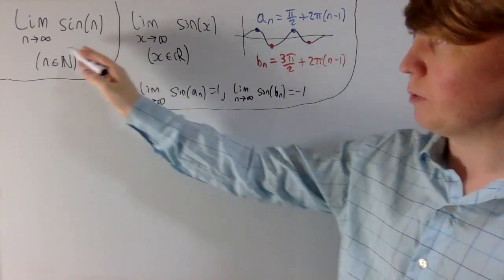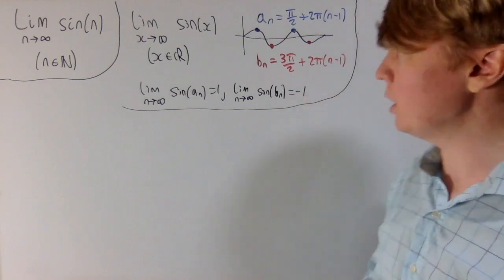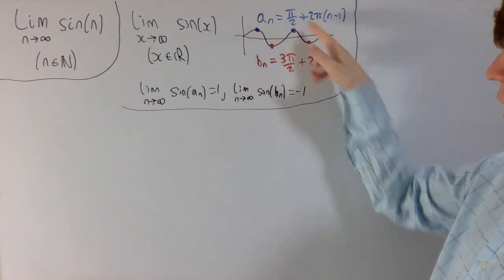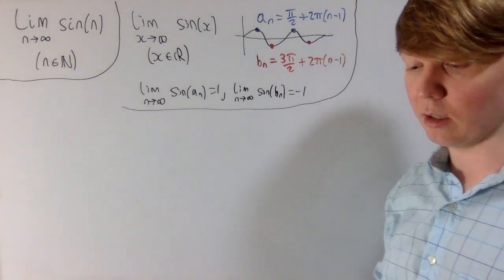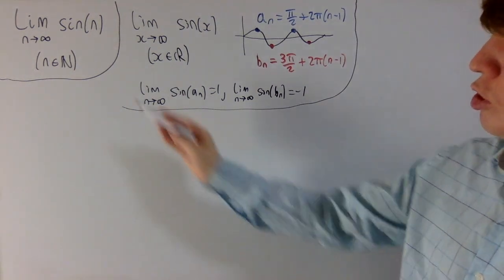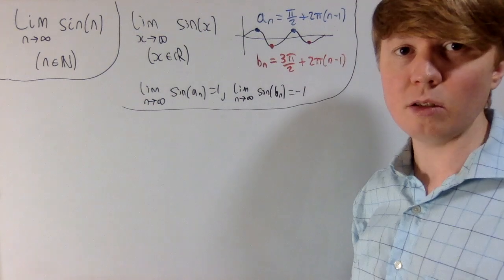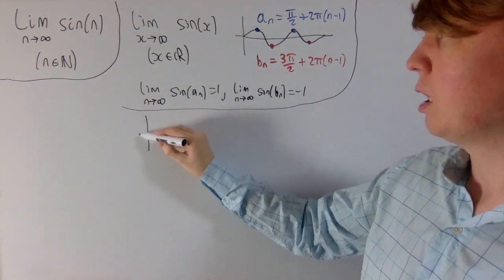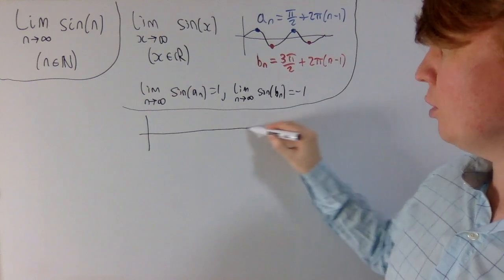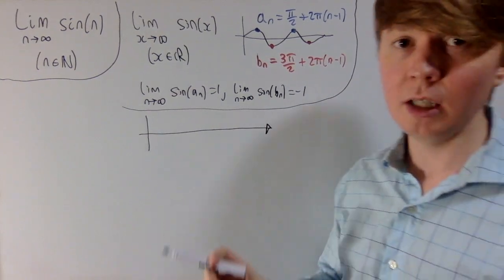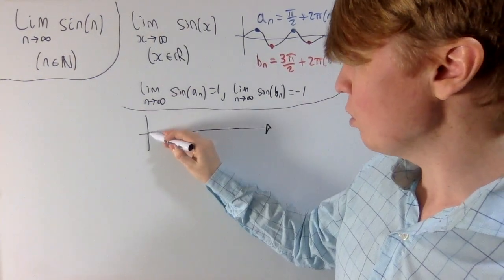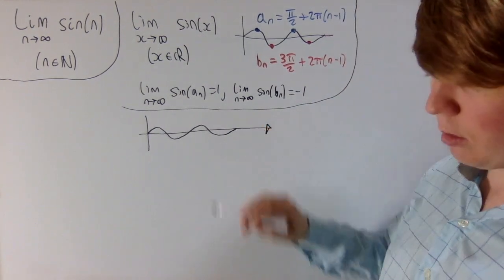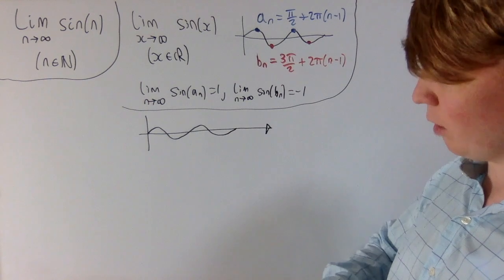We'll try to show something similar for the discrete limit, but this is a little more fiddly because you can't just pick any values you like, like π/2 with its nice values. So how are we going to show the limit doesn't exist? We need to find a nice way of picking subsequences. The integer values of sine aren't particularly nice to work out. However, if we look at the graph of sine, maybe we can do something that's just about good enough.